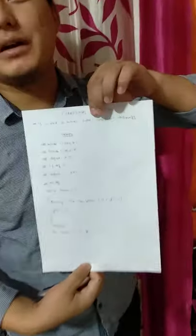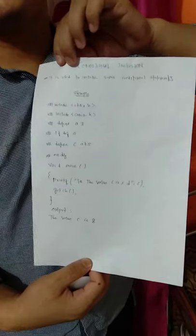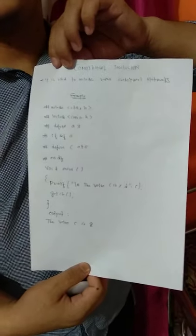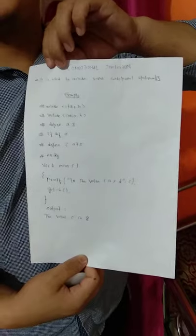Conditional inclusion is used to include some conditional statements. An example of conditional inclusion was shown. Further, I would like to explain in more detail what a preprocessor is, what a macro is, and what preprocessor directives are.